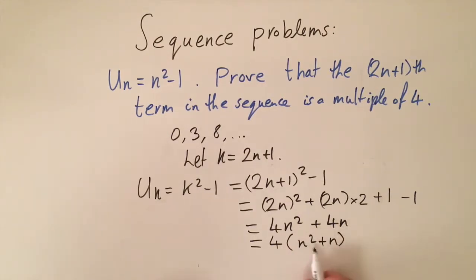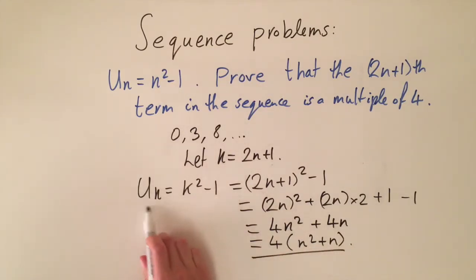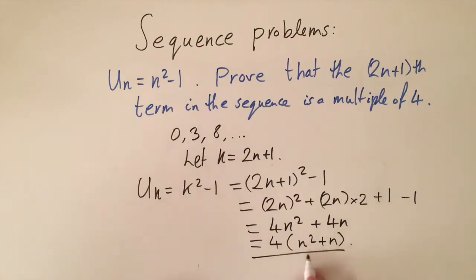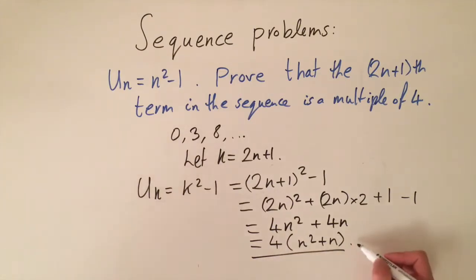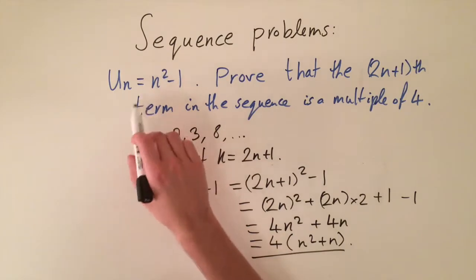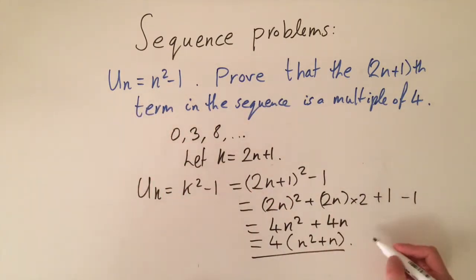We could also factor out the n, but it isn't too important. The key result is that u(k) is a multiple of four. For every value of n we plug in, this expression yields a number multiplied by four. This is how we prove that the odd-indexed terms of this sequence are all multiples of four.